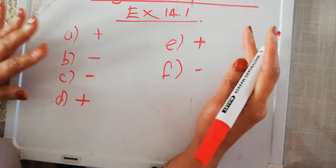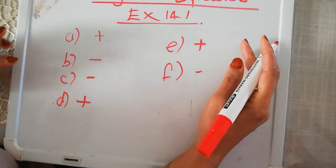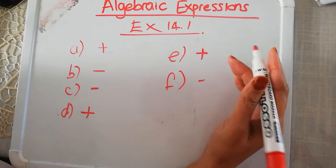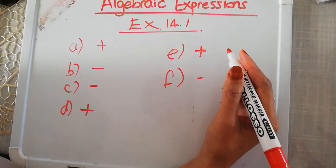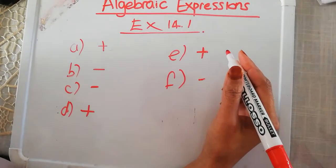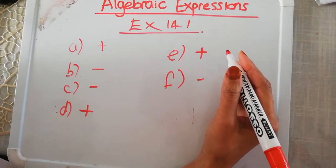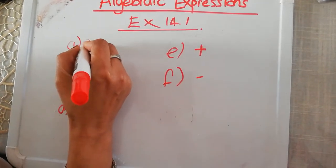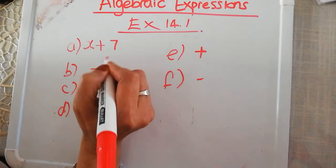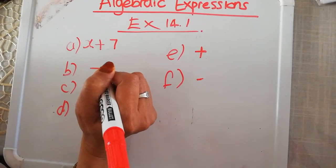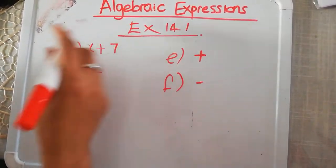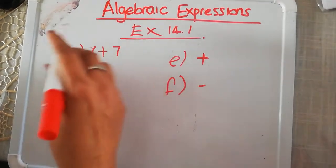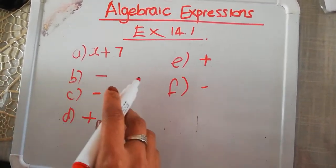Once we know what operation we're using, it's just a matter of following what they're asking us. So I'm only going to do A with you. If you look at A, add 7 to X. To X, you are adding 7. So X is your variable and you're adding 7. So I've given you a clue for exercise 14.1 as to what to do.